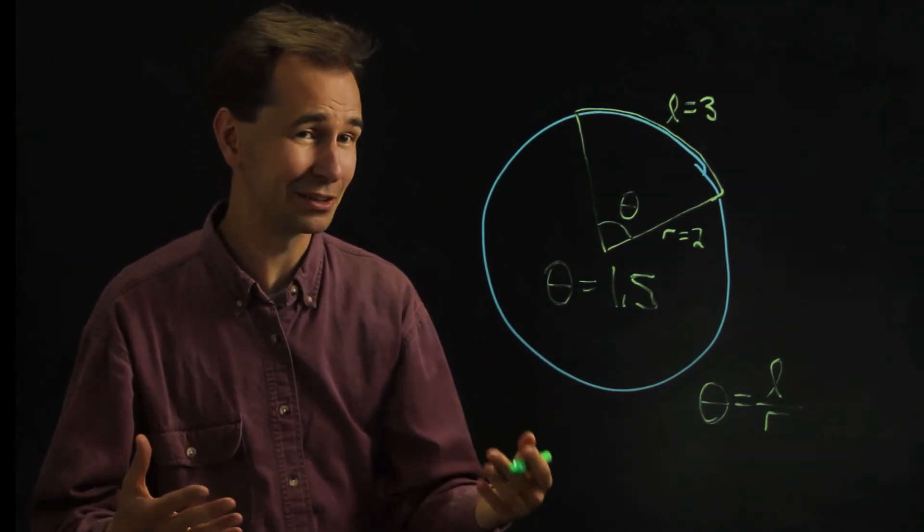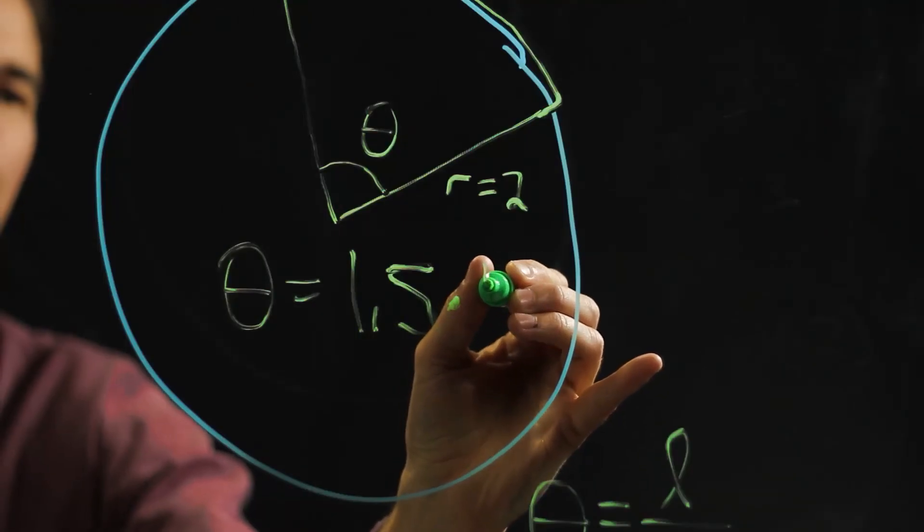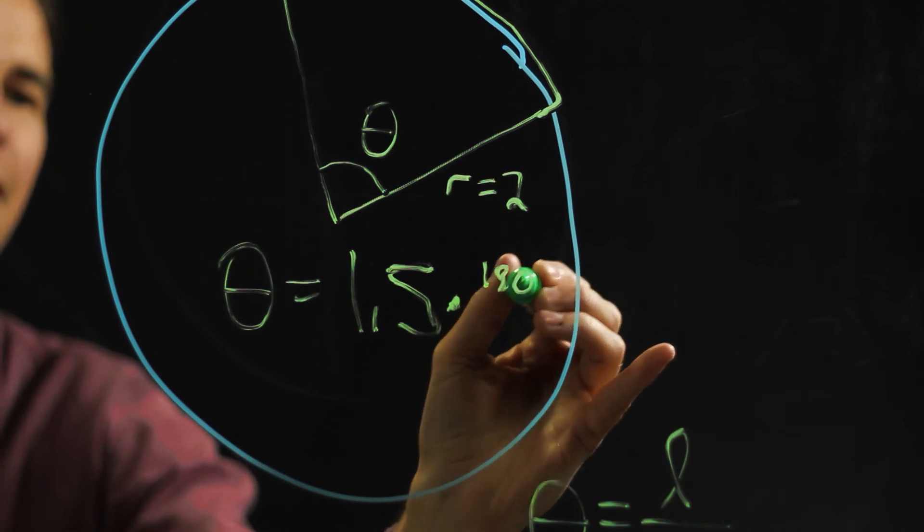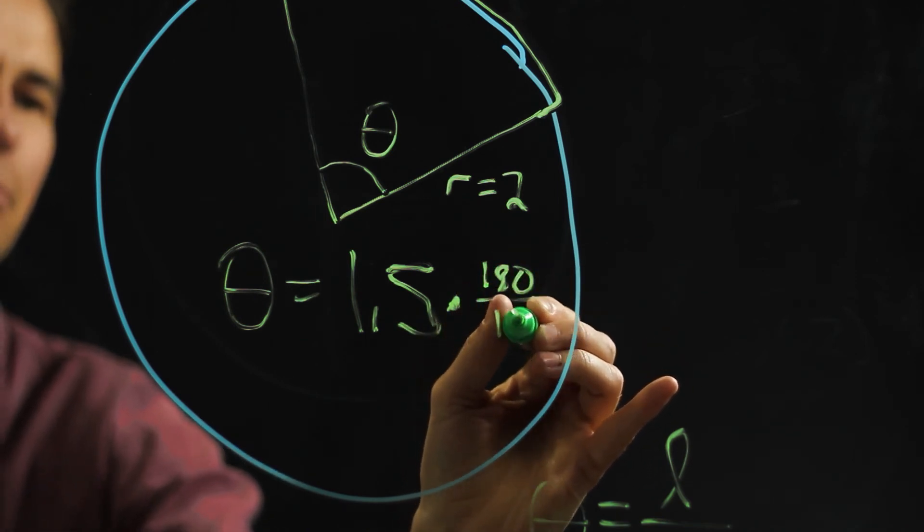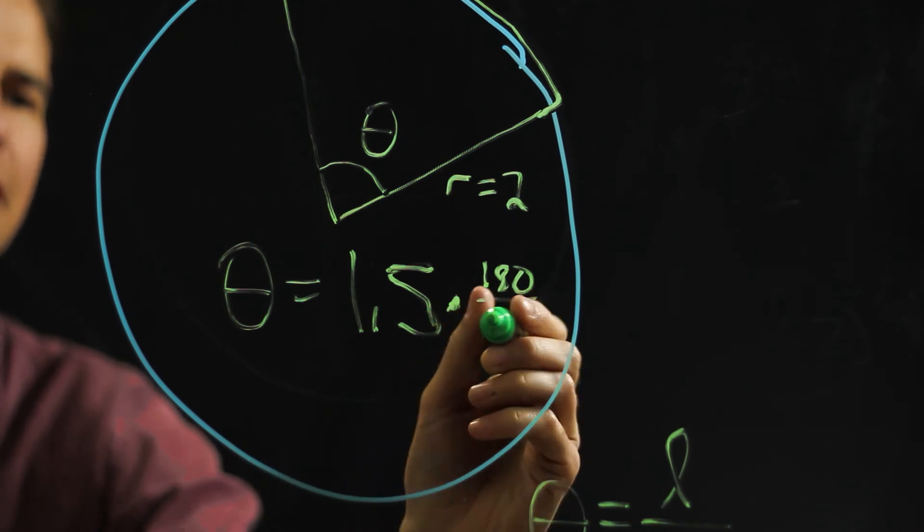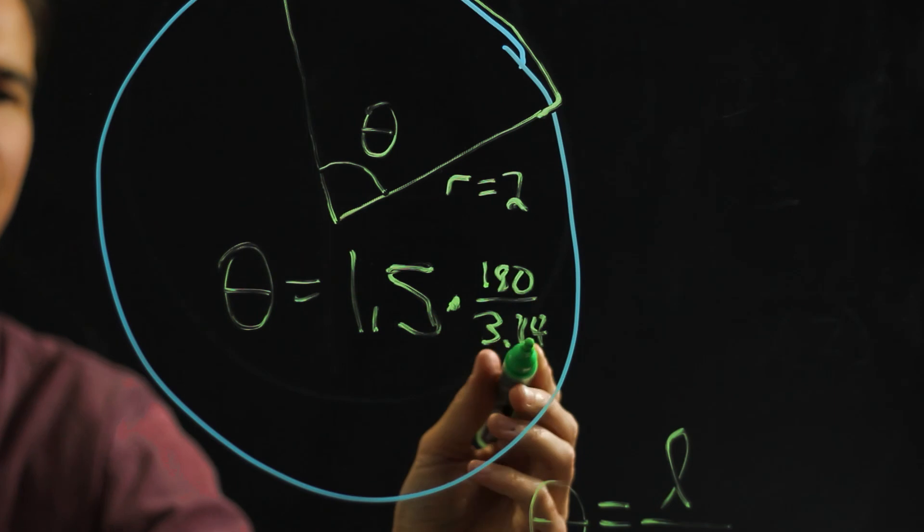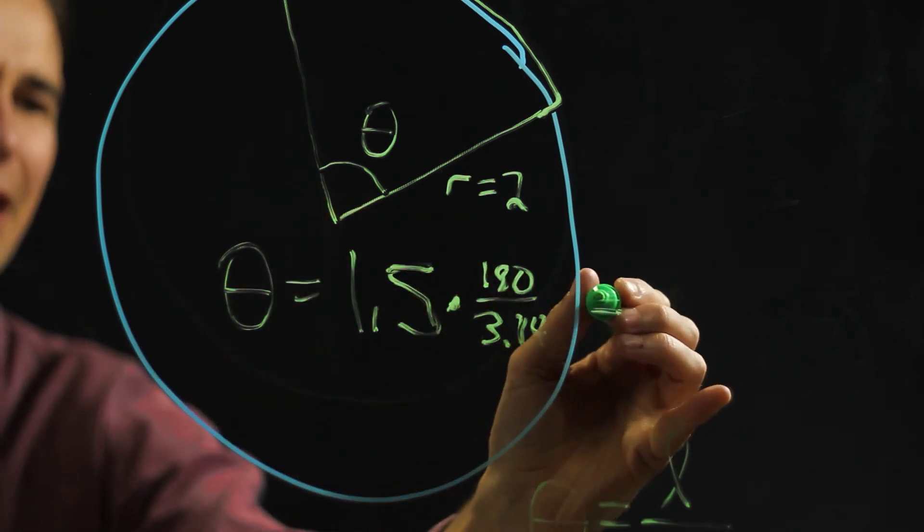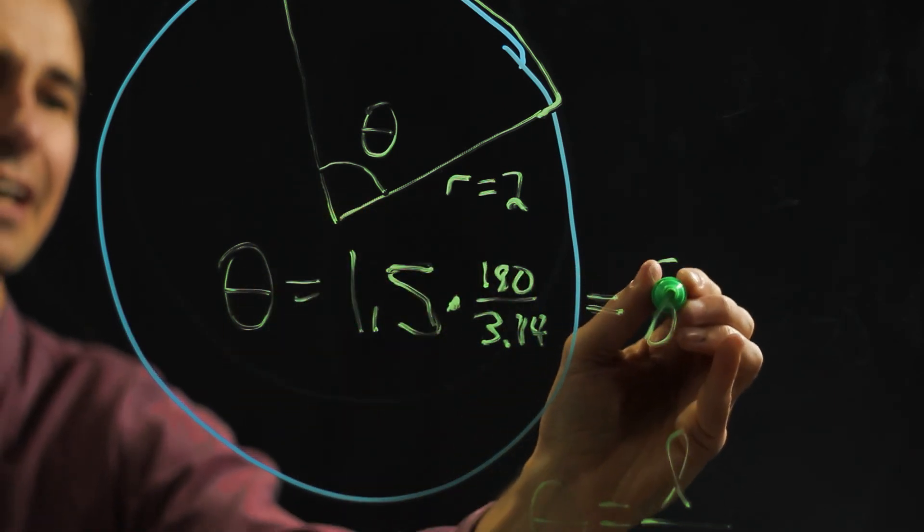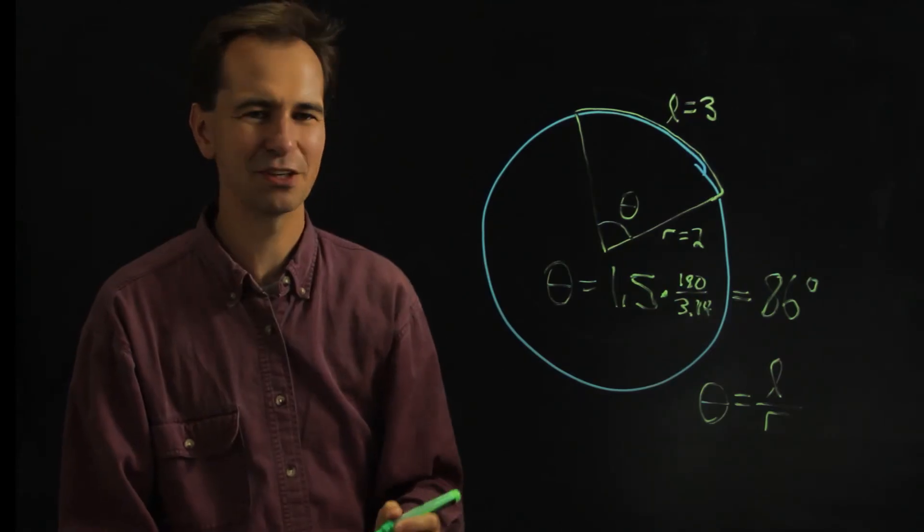If you want it in degrees, you take that and multiply it by 180 divided by pi. Pi is about 3.14. If you get out your calculator and figure that out, it comes out to about 86 degrees. That's all there is to it.